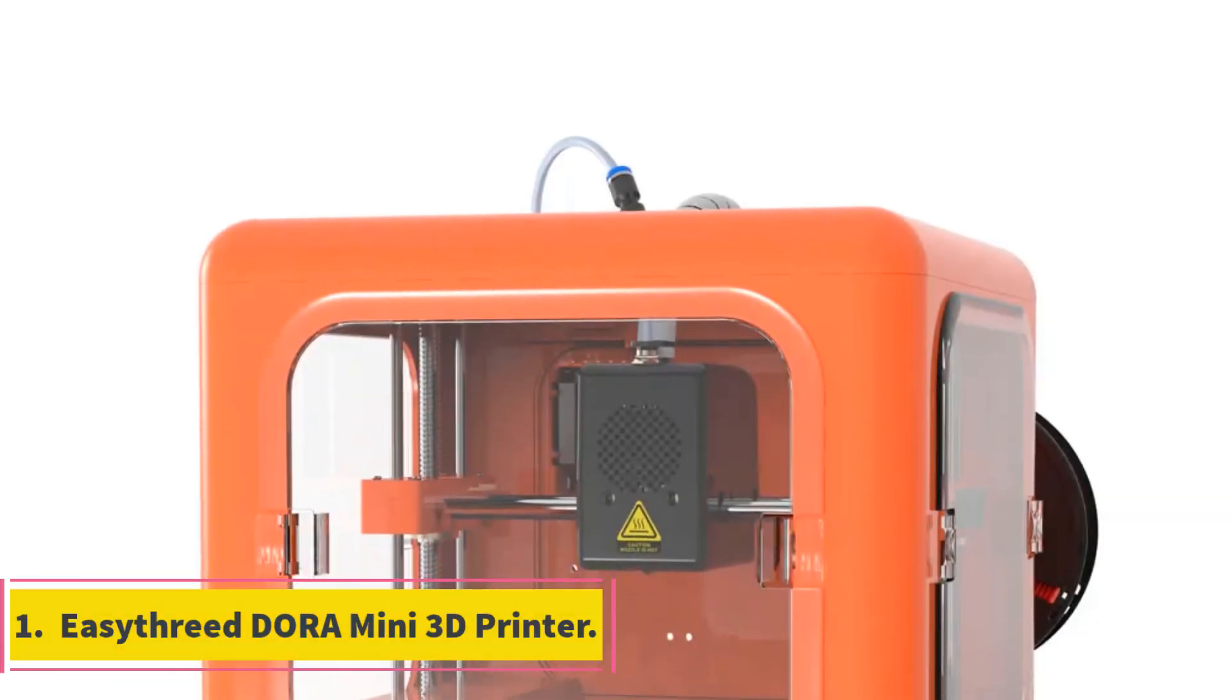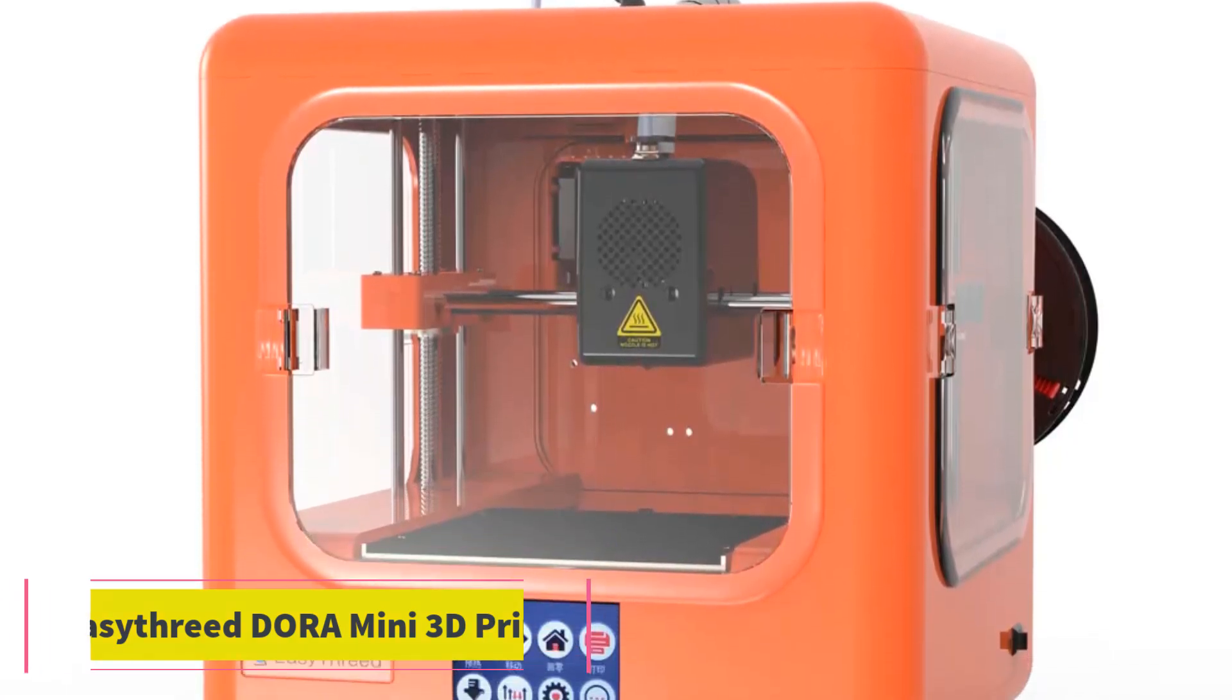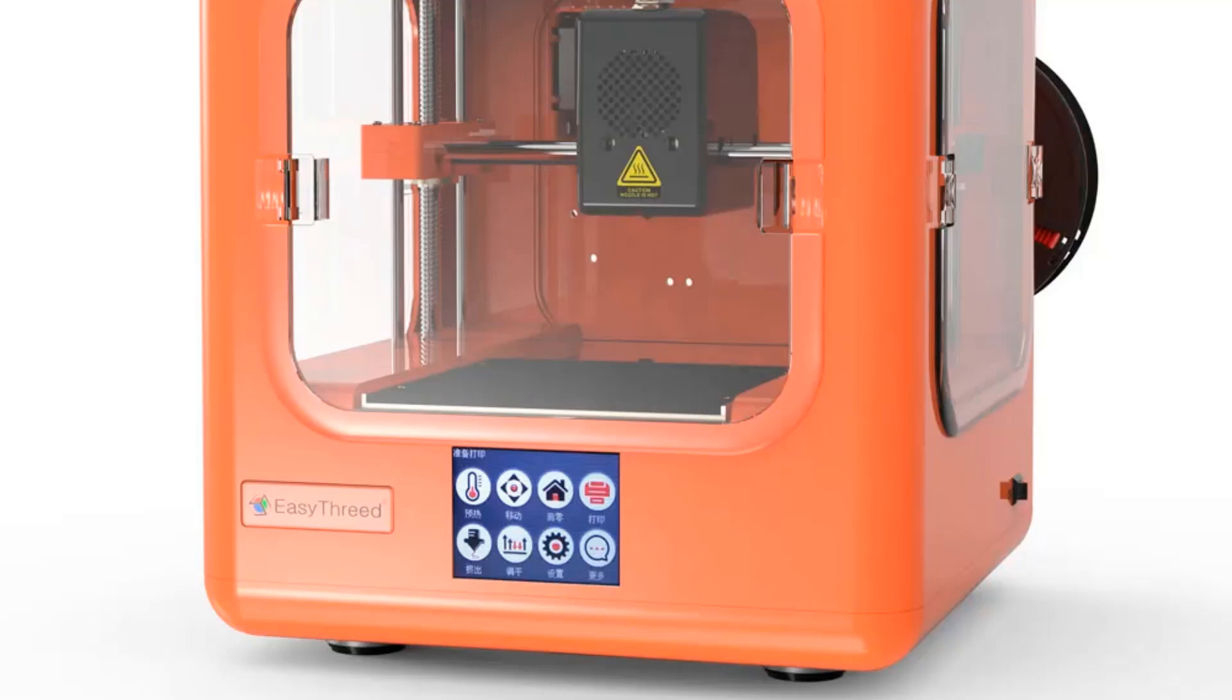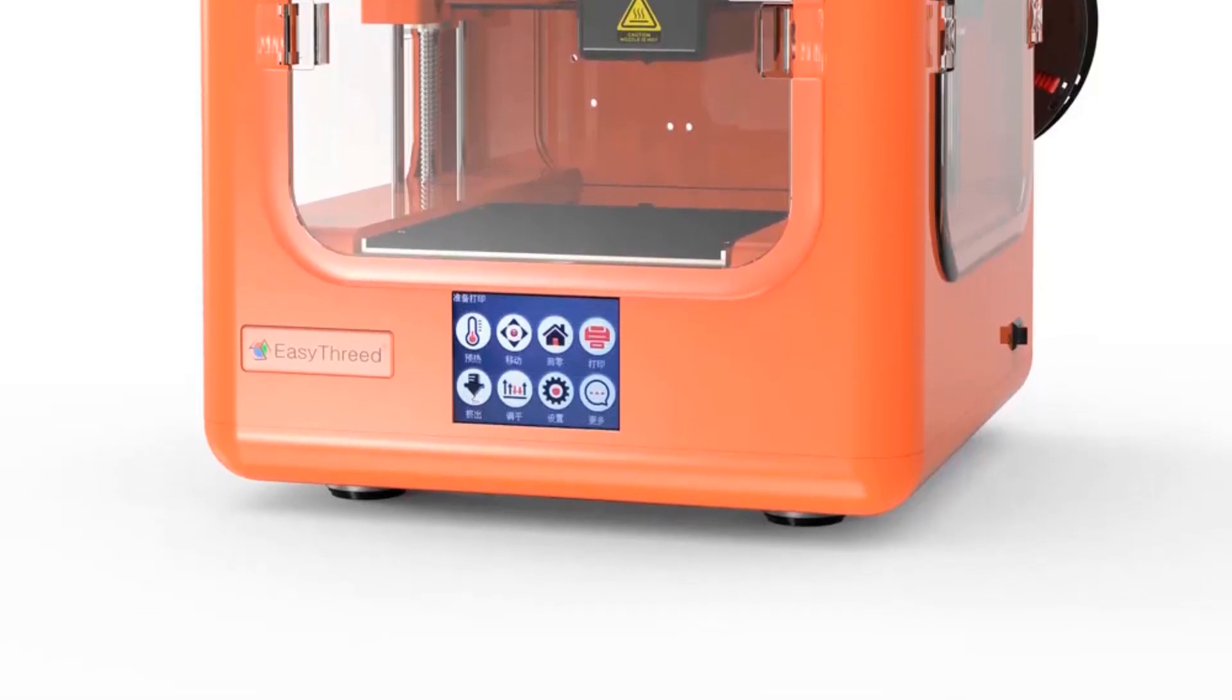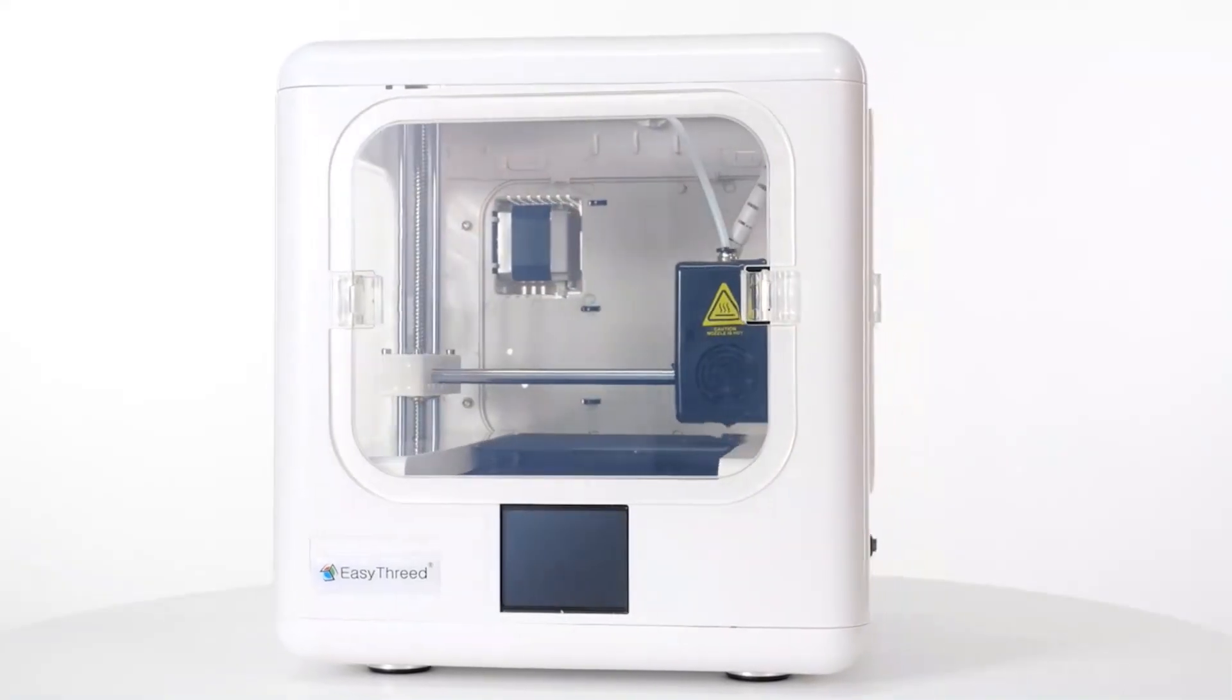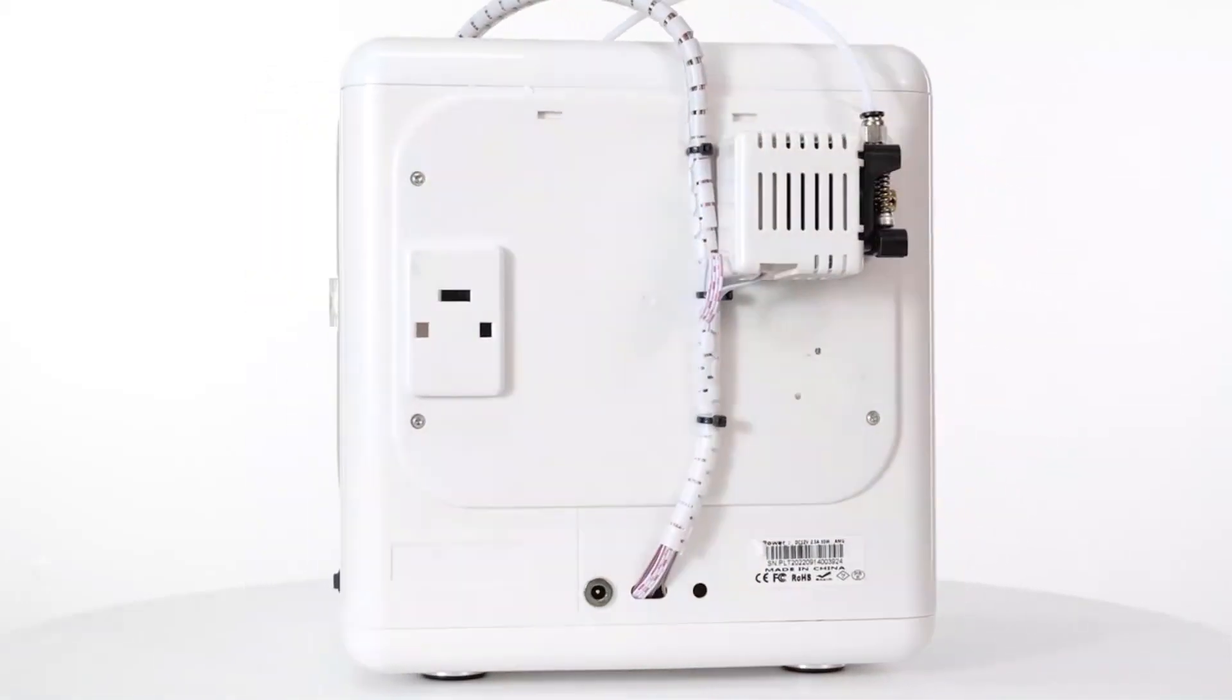Number 1: EZ3 DORA Mini 3D Printer. The EZ3 DORA 3D printer offers a compact and user-friendly printing solution with its portable mini-desktop design and fully assembled setup, making 3D printing easier and more enjoyable. Designed for students, educators, and engineers.